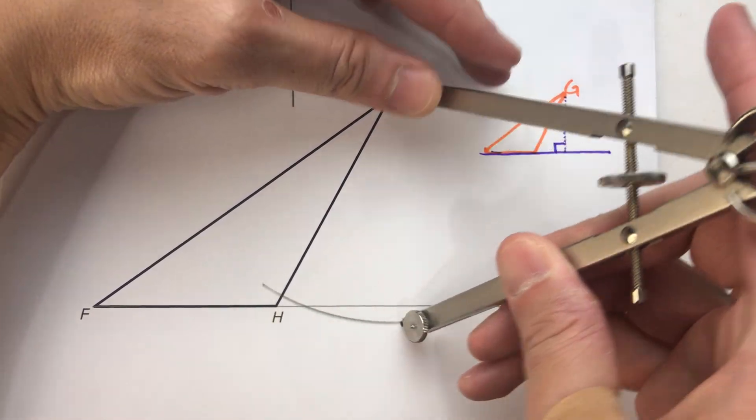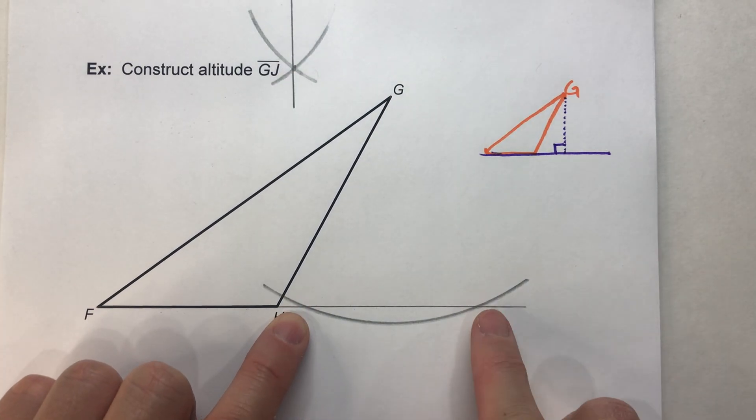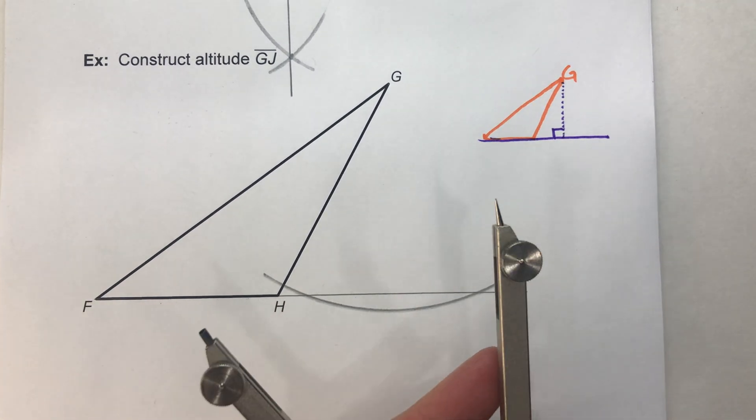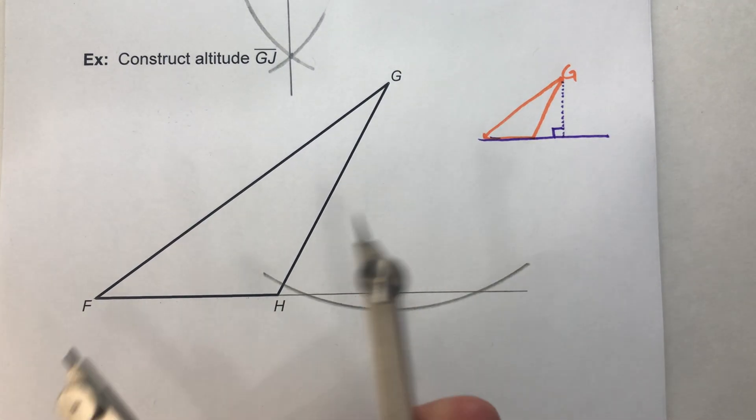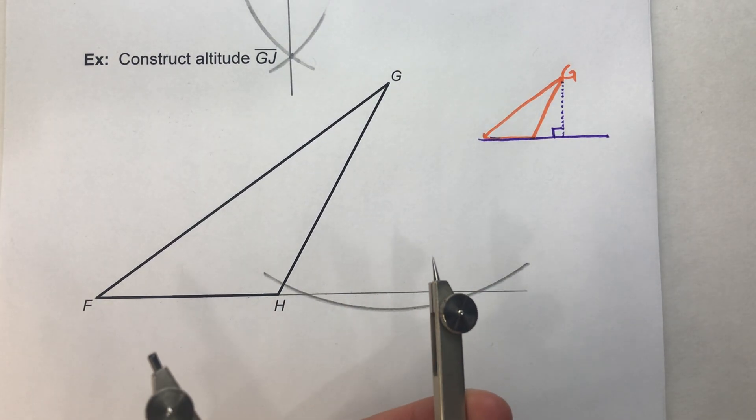Swing an arc, hit that line in two places here and here. And now I'm going to change my compass setting so it's a little smaller because I'm in a little tight space here.